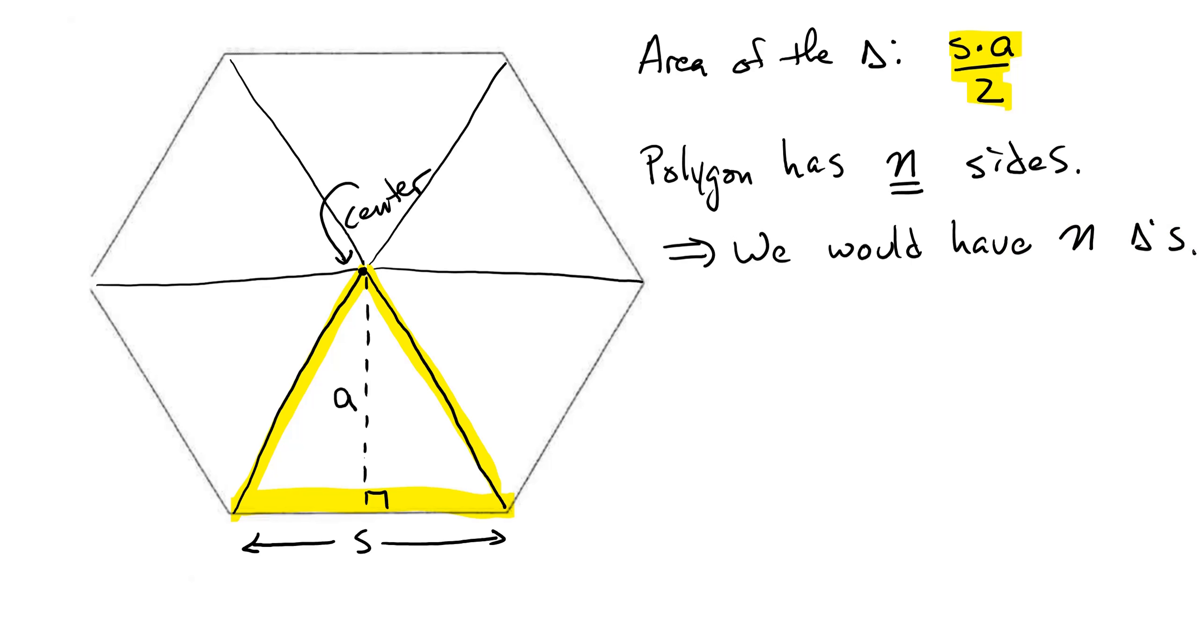So just like this one where it had six sides, I divided it into six triangles. If it had N sides, this is a little abstract, which is why it's sometimes confusing.